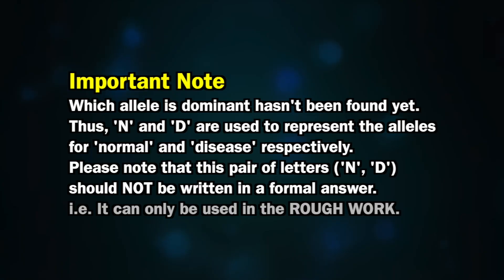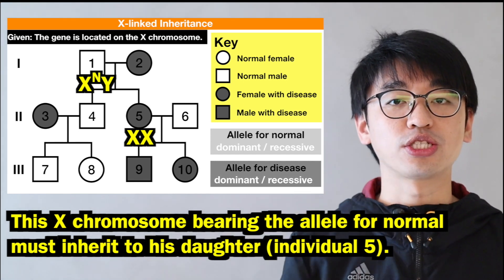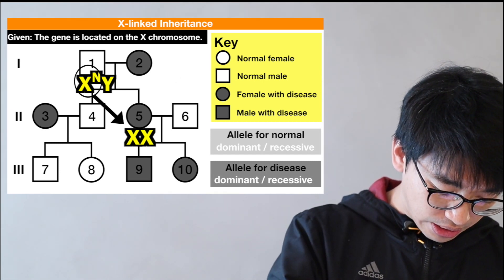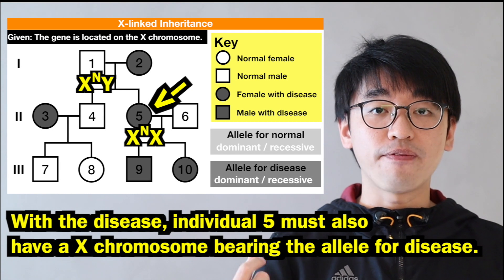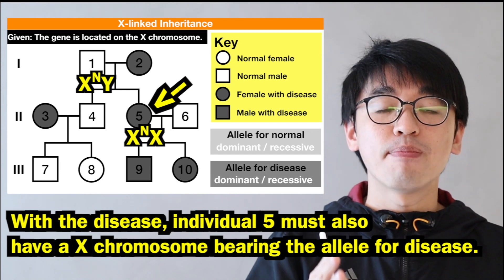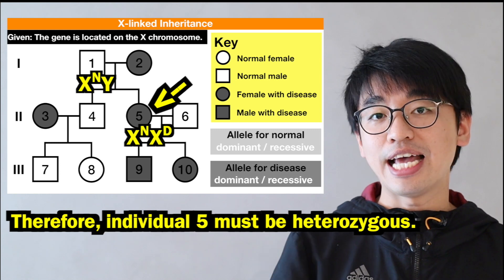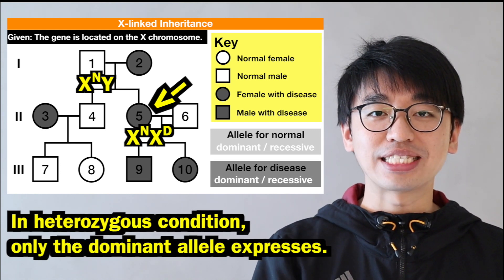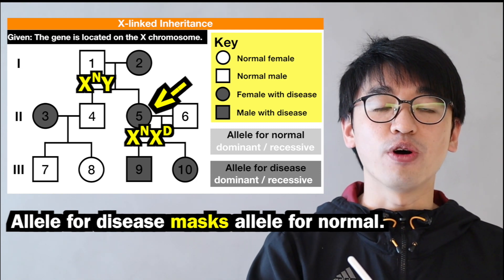Individual 1's X chromosome bearing the normal allele must be inherited by his daughter, individual 5. So one of individual 5's X chromosomes bears the allele for normal. However, individual 5 shows the disease phenotype, meaning her other X chromosome must bear the allele for disease. This makes individual 5 heterozygous, and in a heterozygous condition only the dominant allele is expressed. Since she shows disease, the allele for disease must be dominant.